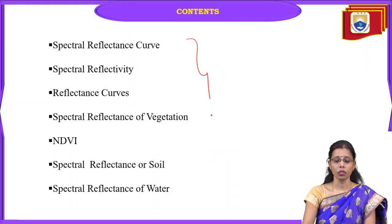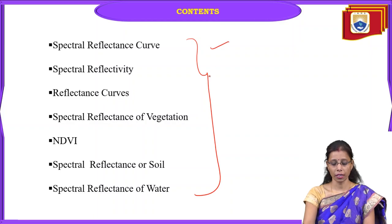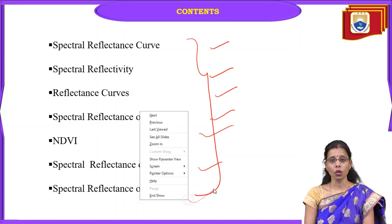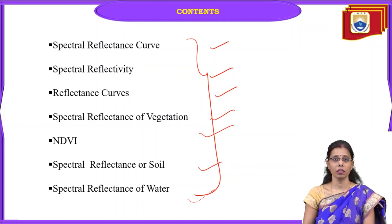Let us go through the contents we are going to discuss in this topic: Spectral Reflectance Curve, Spectral Reflectivity, Spectral Reflectance Curves, Spectral Reflectance of Vegetation, NDVI, Spectral Reflectance of Water. These are all earth surface features, and we will see how energy falling on them causes them to react differently.